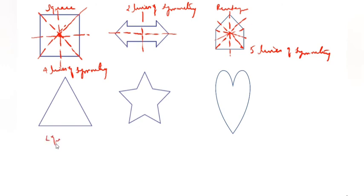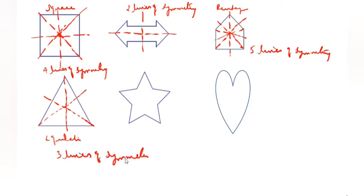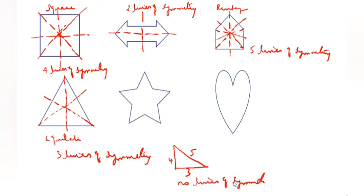This is an equilateral triangle. Equilateral triangle has all sides equal. This is 1, this is 2, this is 3 — 3 lines of symmetry. If you take a scalene triangle, all 3 sides are not equal — this is 5, this is 4, this is 3 — all sides are not equal. So, this is called scalene and has no lines of symmetry.